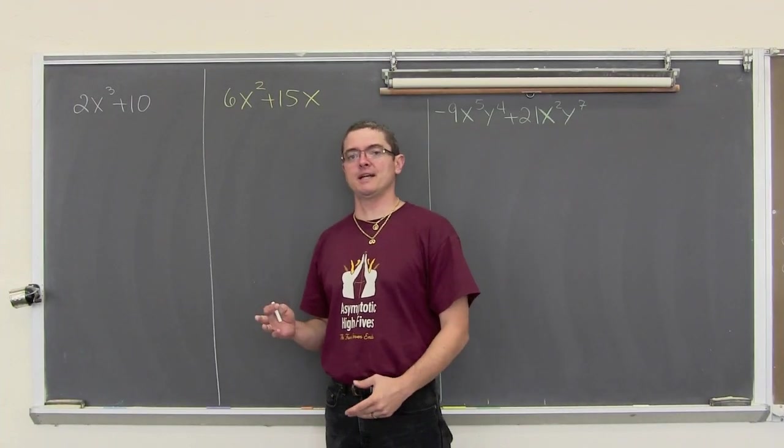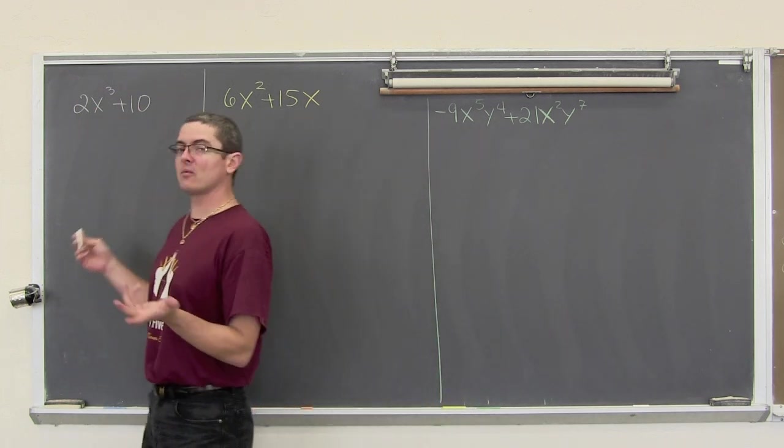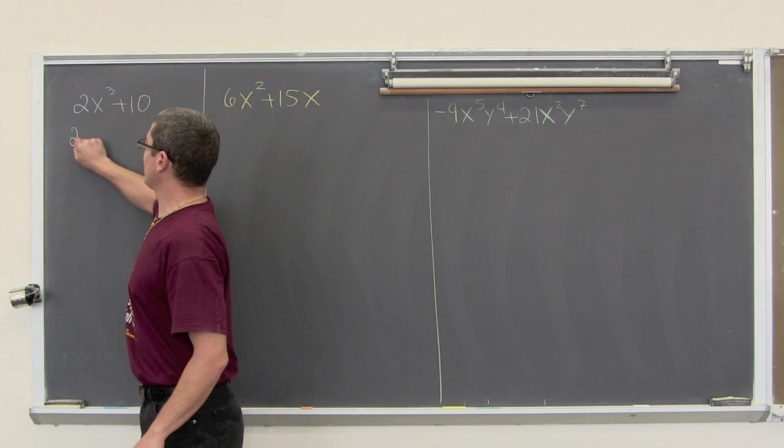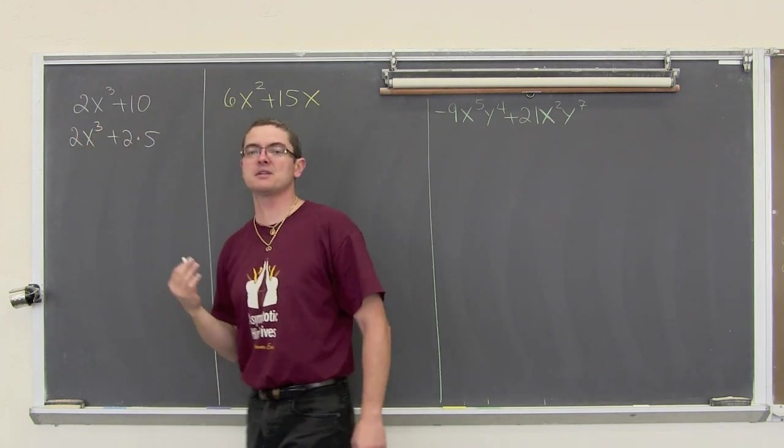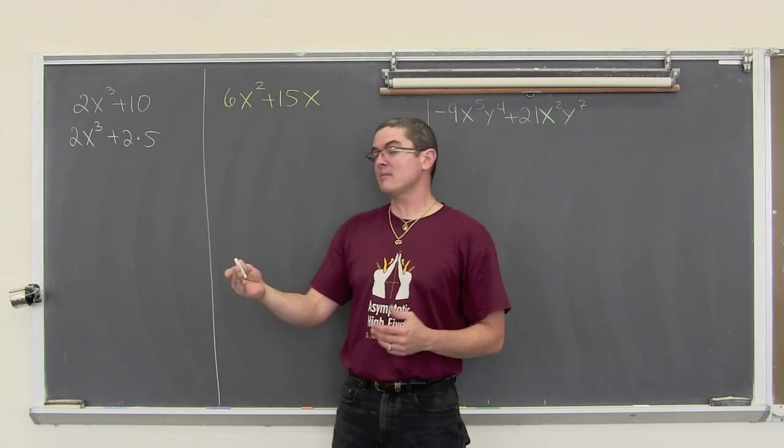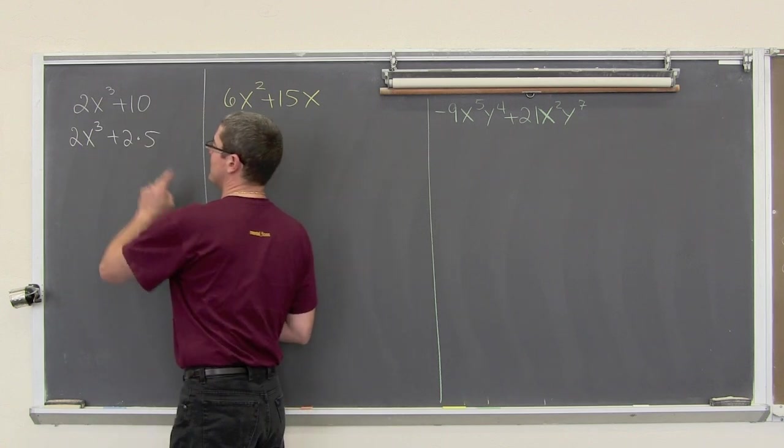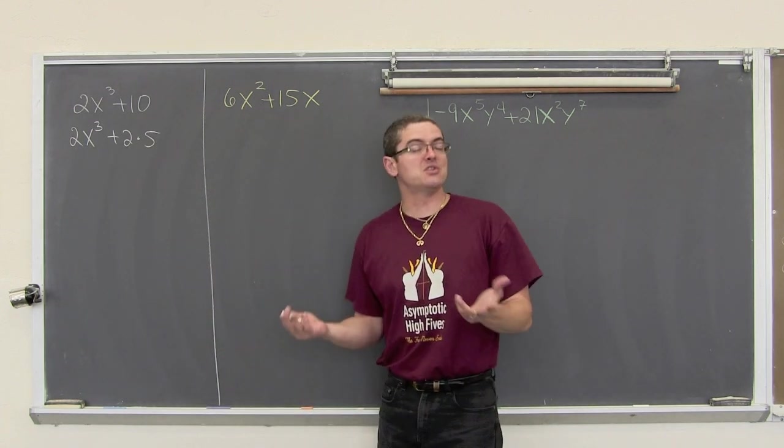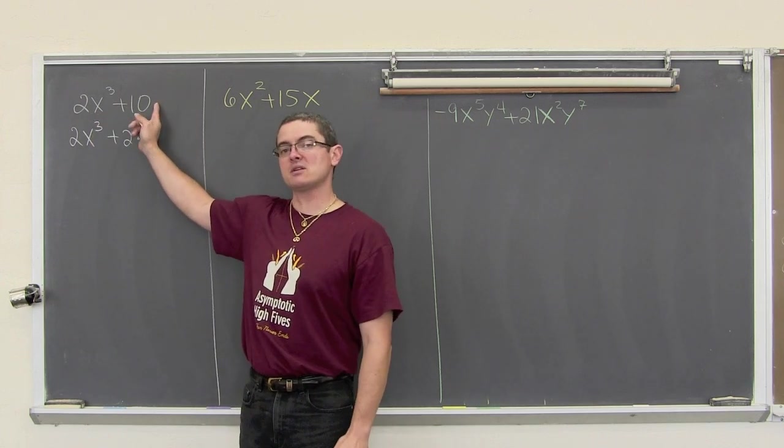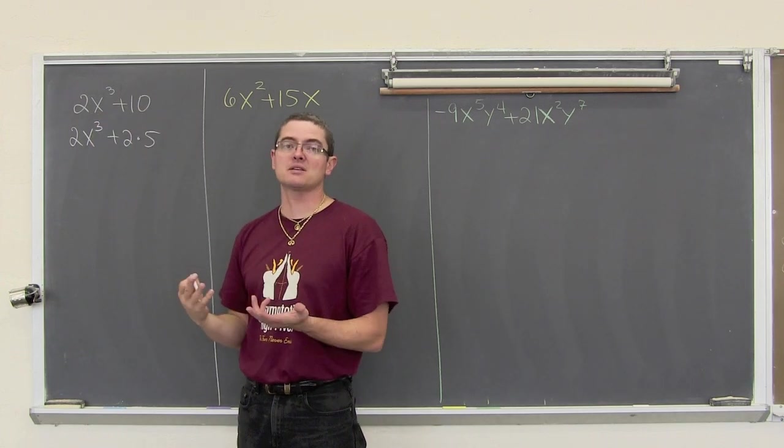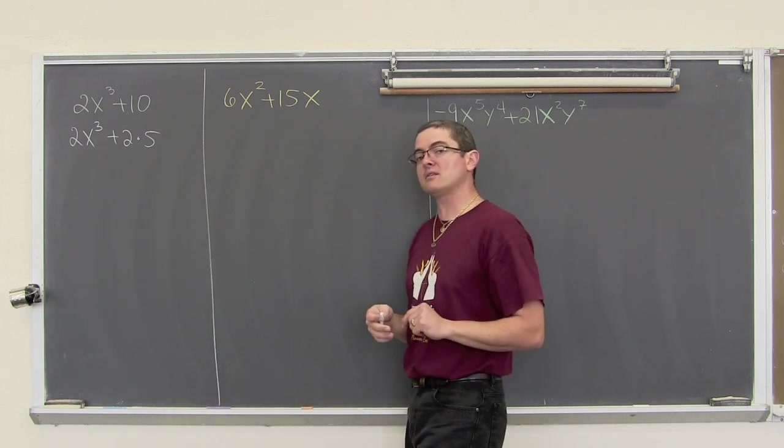We have 2x cubed plus 10. Now these two terms both have a factor of 2. I am not going to write all these examples like this I don't think, but we can write 2x cubed plus 2 times 5, where I am taking that constant and showing you that both the first term has a factor of 2 and so does the second. So, if both of your terms have a common factor, a GCF, then that is what you are going to want to take out. Now, this has 3 x's to give out, but the second term doesn't have any, so I can't take any x's out.